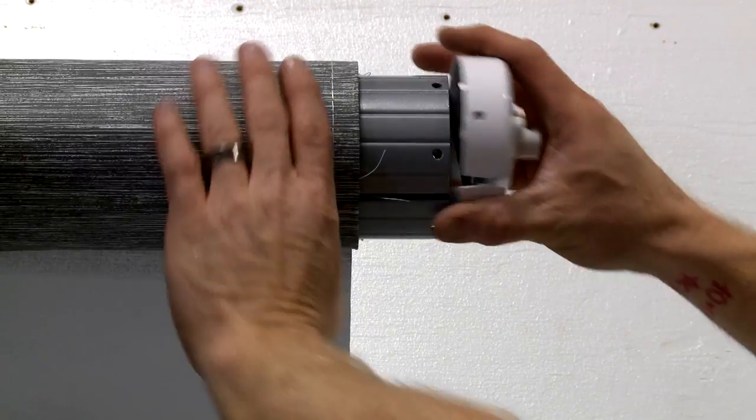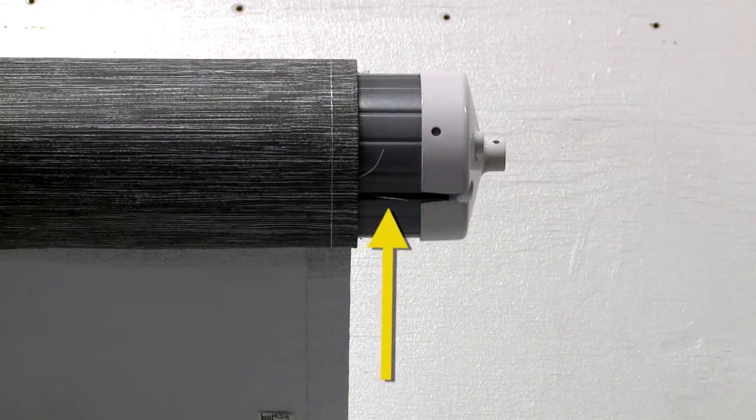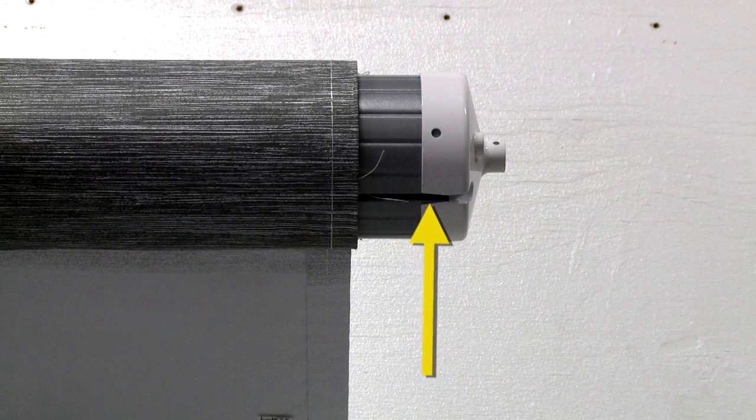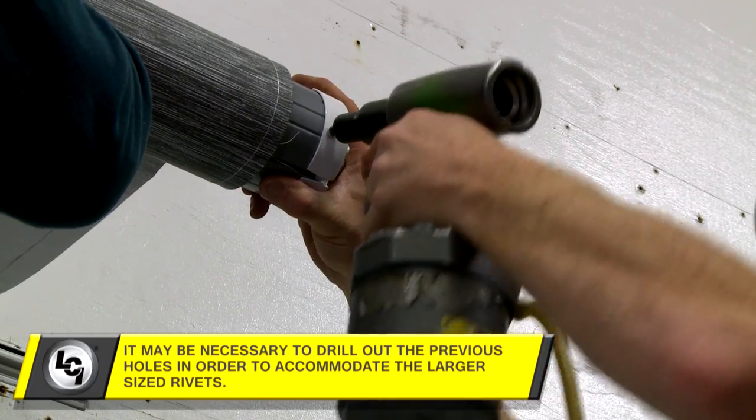Now, place the Solera end cap on the end of the roll tube, making sure it is properly seated and the roll tube channel is aligned with the channel on the end cap. Secure the Solera end cap to the roll tube with the provided rivets.